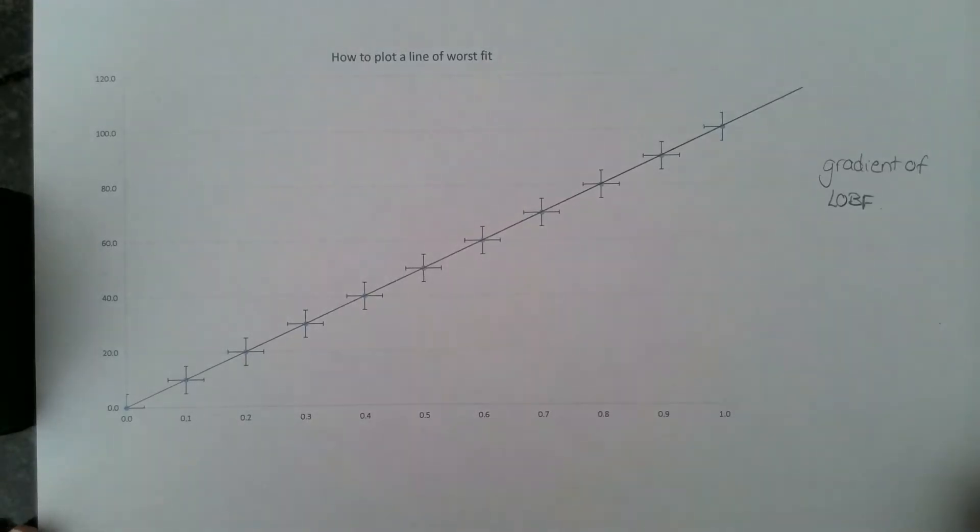Hello, today we are looking at plotting lines on graphs, particularly for A-level physics and specifically how to plot a line of worst fit.